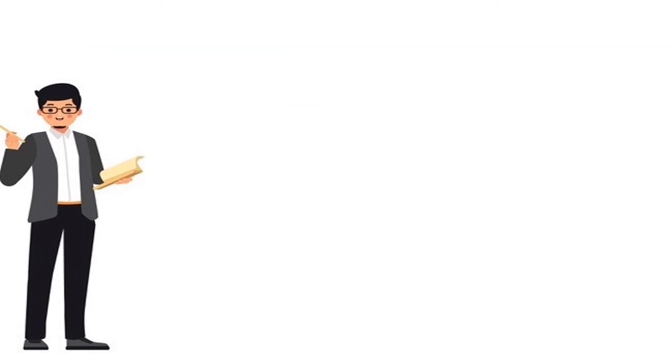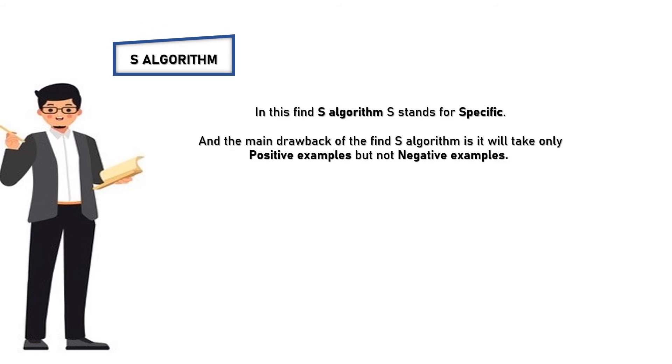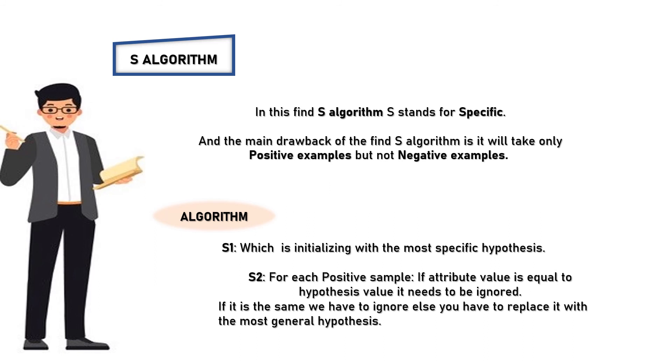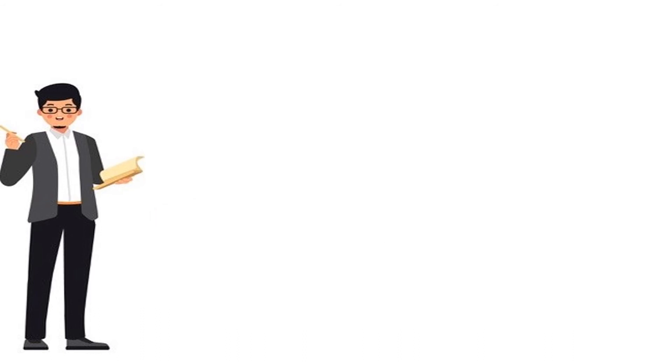Our next topic is Find S algorithm. In this Find S algorithm, S stands for specific. And the main drawback of the Find S algorithm is it will take only positive examples but not negative examples. Algorithm: Let us consider S1, which is initializing with the most specific hypothesis. S2: For each positive sample, if attribute value is equal to hypothesis value it needs to be ignored. If it is the same we have to ignore, else you have to replace it with the most general hypothesis.